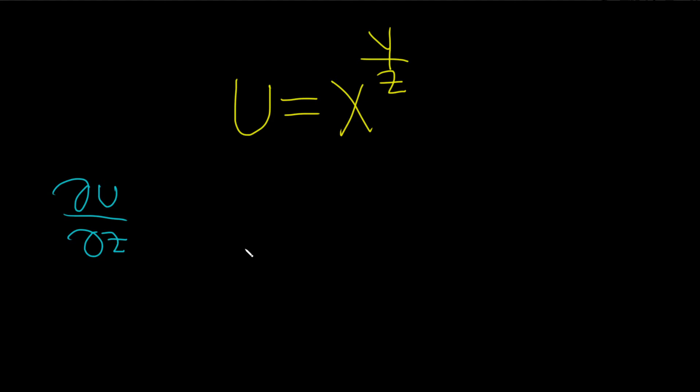In this problem, we're being asked to find the partial derivative of u with respect to z. So when we're finding the partial with respect to z, all of the other variables are constants. So let's think about that before we do the derivative.